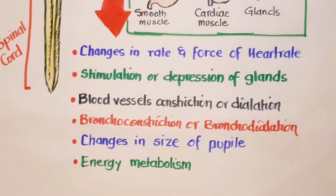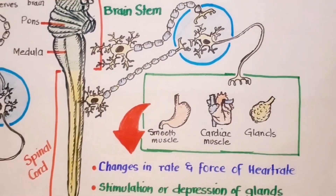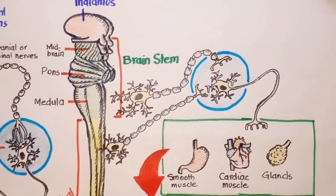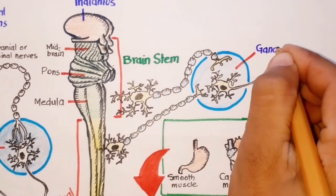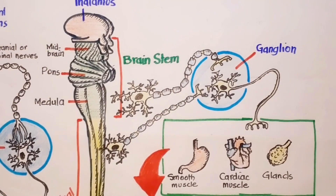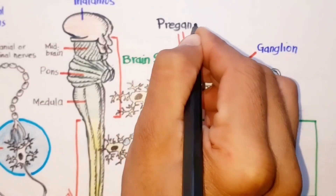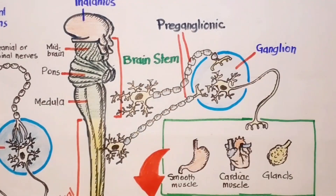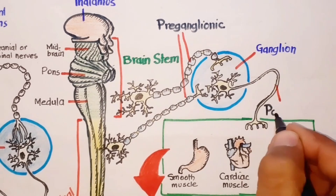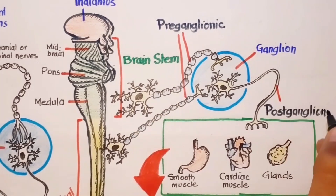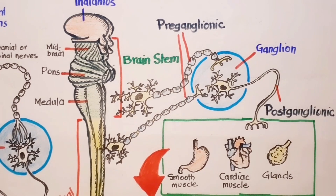Generally, an autonomic pathway from the central nervous system to a visceral effector consists of two motor neurons that synapse at a ganglion outside the CNS. The first neuron is called the preganglionic neuron — from the CNS to the ganglion — and is myelinated. The second neuron is called the postganglionic neuron — from the ganglion to the visceral effector — and is unmyelinated. The ganglia are actually the cell bodies of the postganglionic neurons.